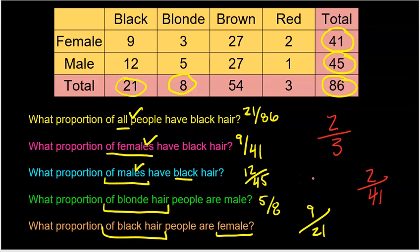There are many possible conditionals — of the males, of the red-haired people, of the females, of the brown-haired people, and so on. Those are all conditional relative frequencies.